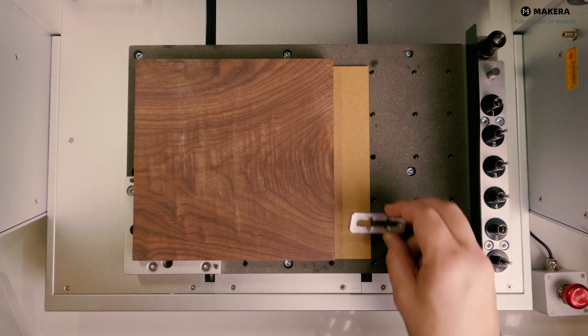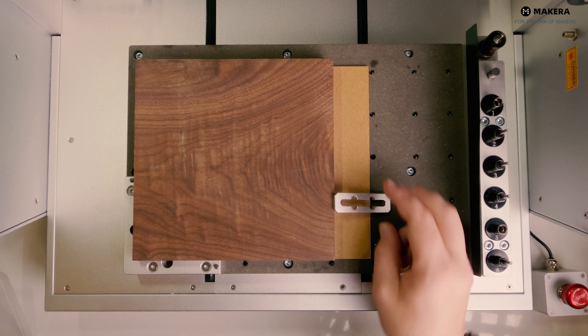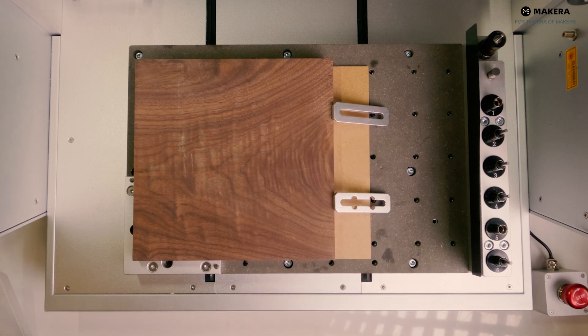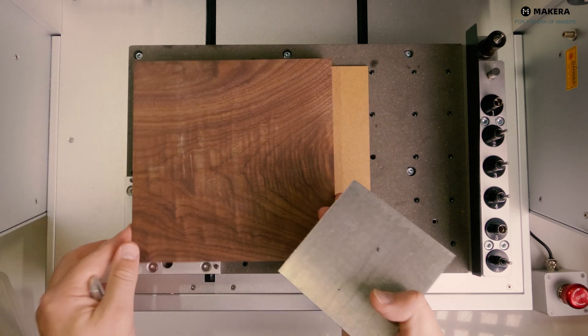First, you start with the waste board if you're cutting through the material. In some cases, the spoil board can be a bit bigger than the material. It is all depending on if you can still clamp the material down.